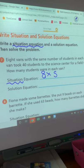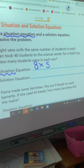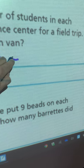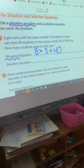Eight vans with the same number of students in each van took 40 students to the science center for a field trip. So 40. There's our situation equation.